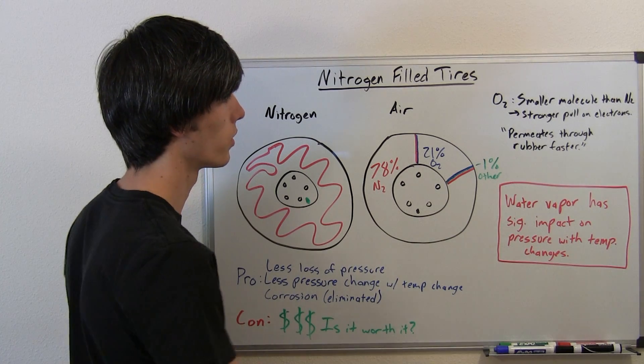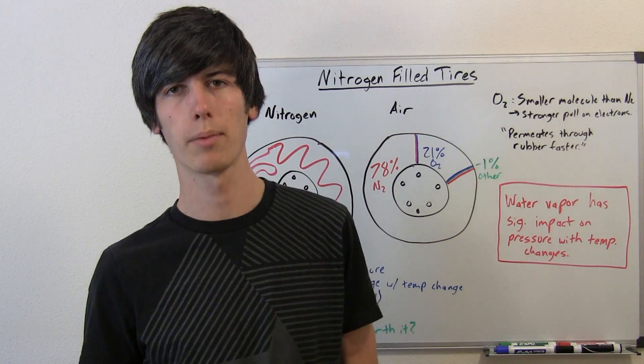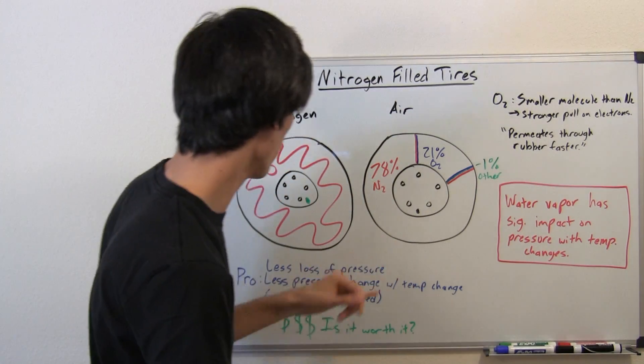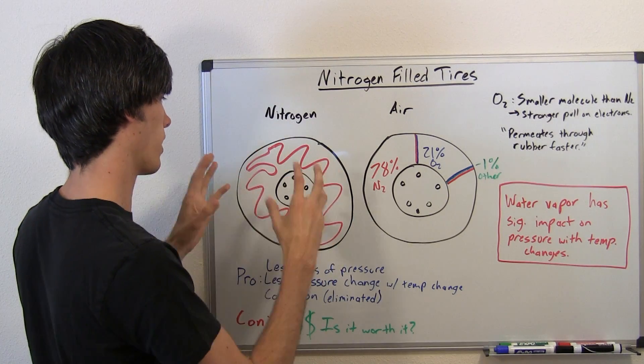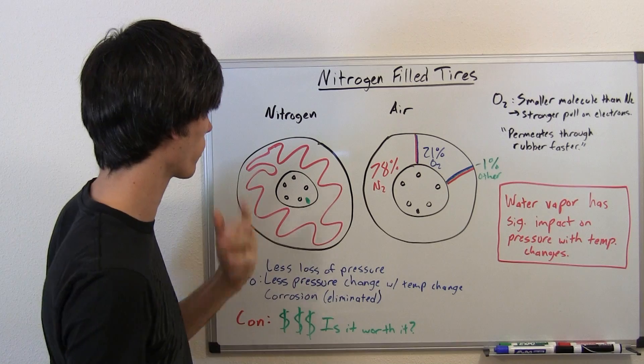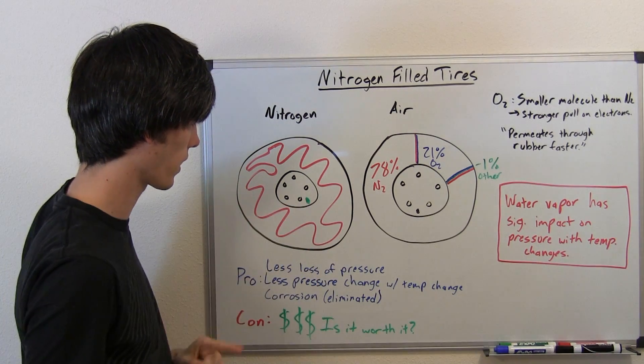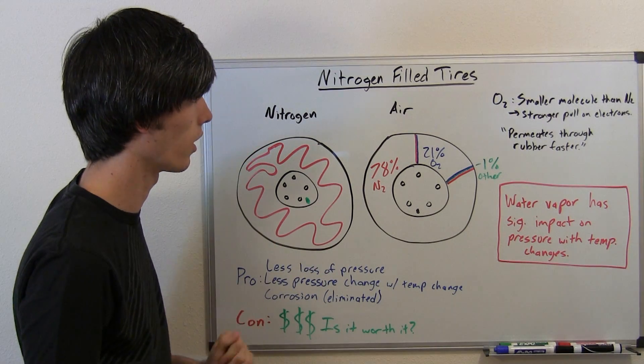21% will be oxygen and 1% will be everything else—argon, water vapor, carbon dioxide, things like that. If you have a nitrogen-filled tire, you just have 100% dry nitrogen. I say dry because there's no water vapor in there, no moisture. And you get a sweet little green cap for your air valve, which is a nice added benefit.